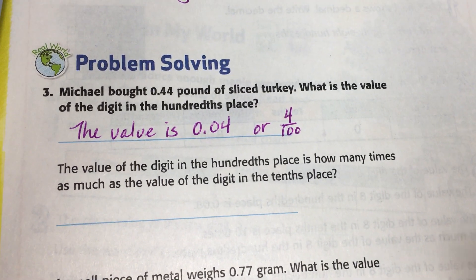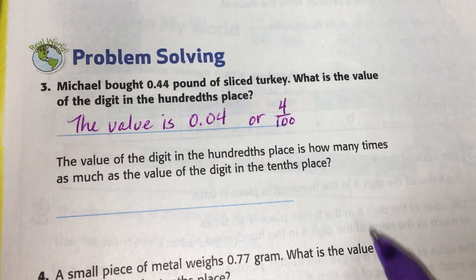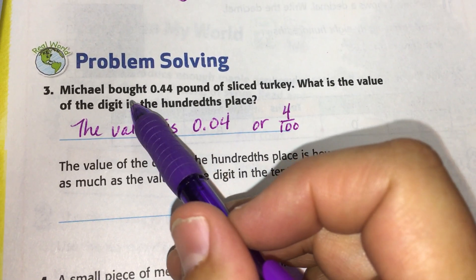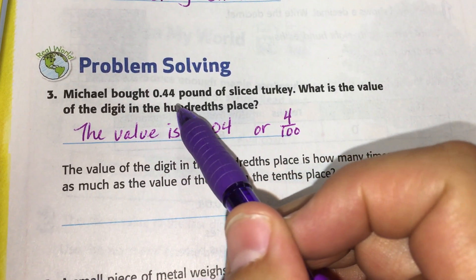All right, quick video here to show you how to answer number three in a sentence. That's clear, that shows you know your place values and you know that relationship.